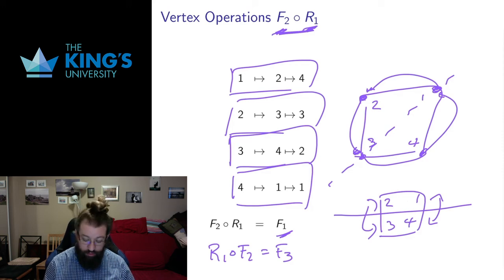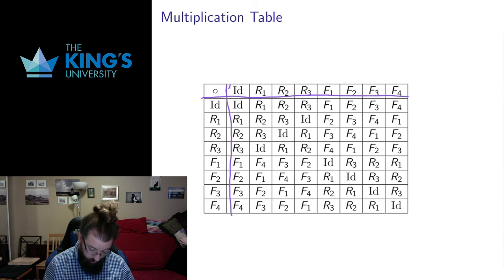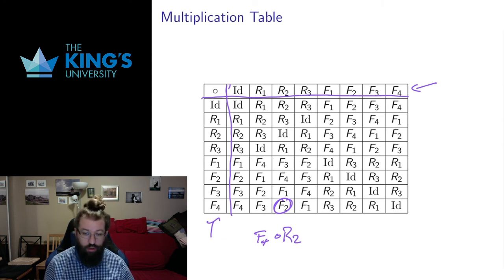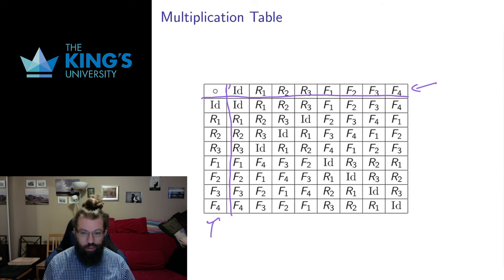Those are just two examples, but I could keep doing that and put together a whole multiplication table. I've now done all 64 entries rather than just two. For example, F4 composed R2 gives F2. When you calculate these you often don't have to do all 64 — you'll find patterns you can use.